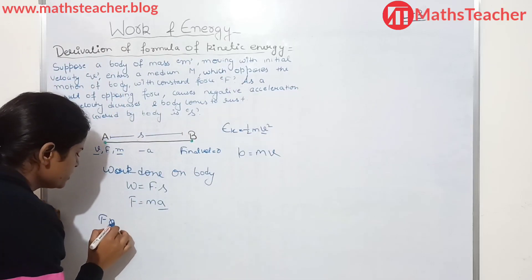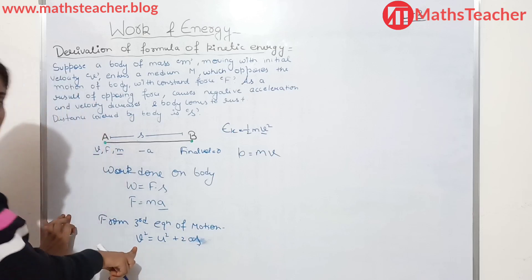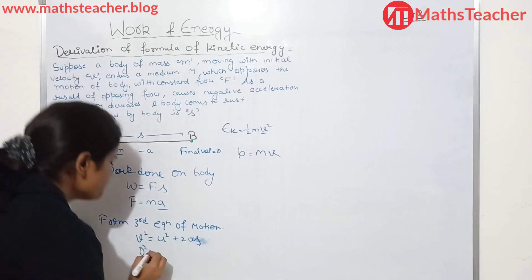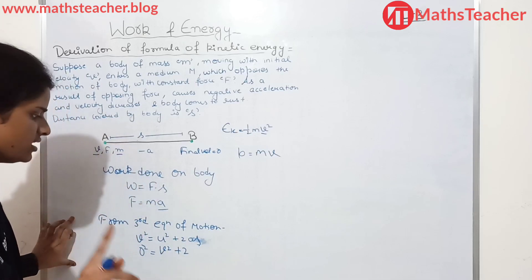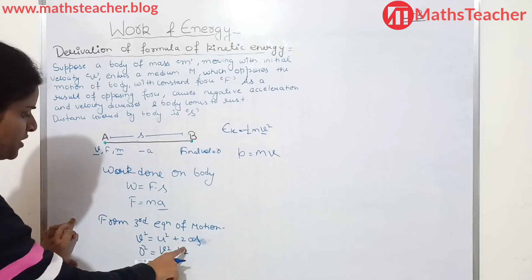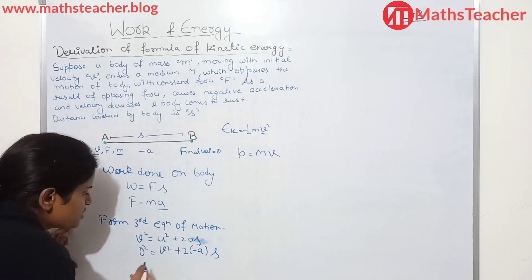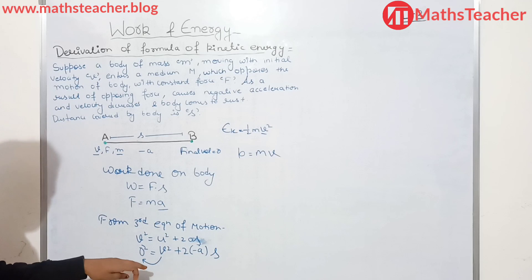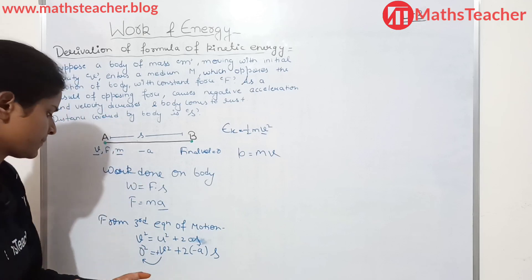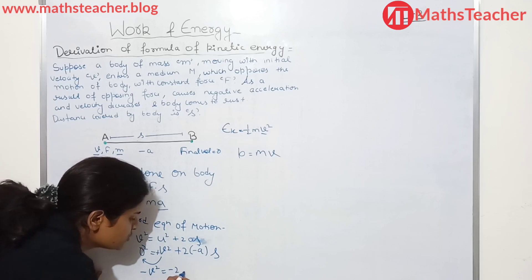Now we will calculate the value of acceleration using the third equation of motion. We keep values: final velocity is zero, so zero squared equals U squared — here U is the initial velocity represented as V — plus 2aS. Since acceleration is negative, after shifting terms, minus V² equals minus 2aS. So the acceleration a = V²/2S. This is equation number 1.